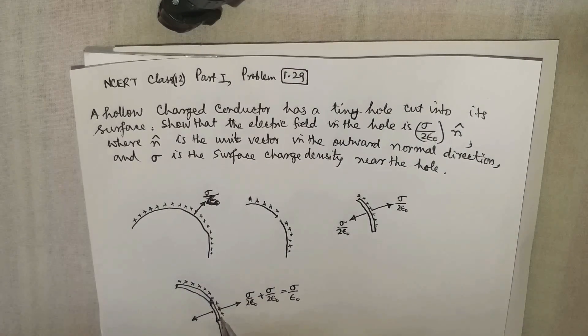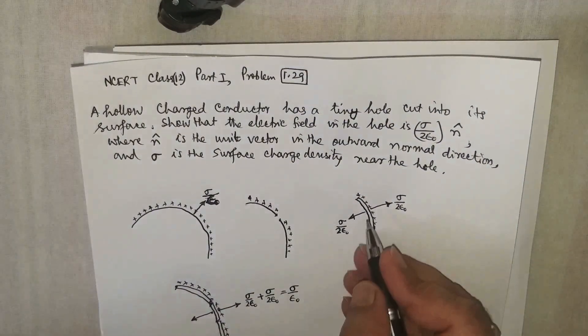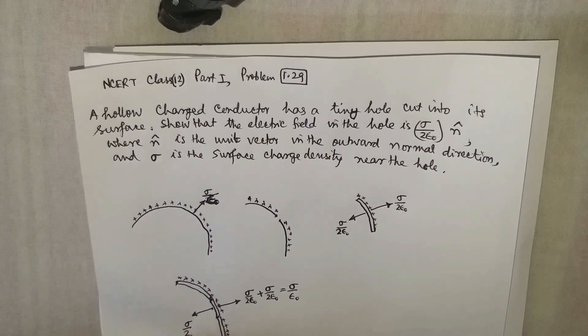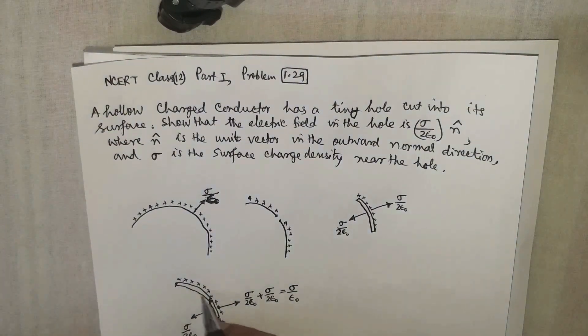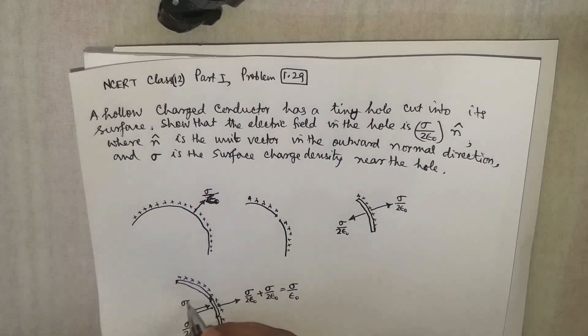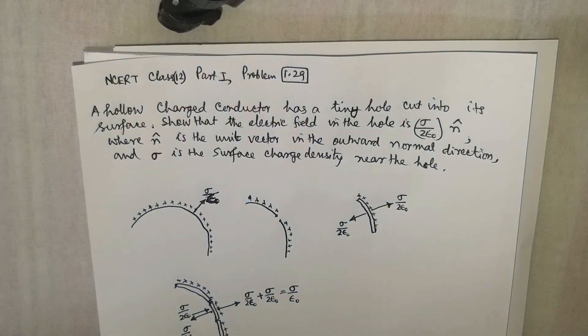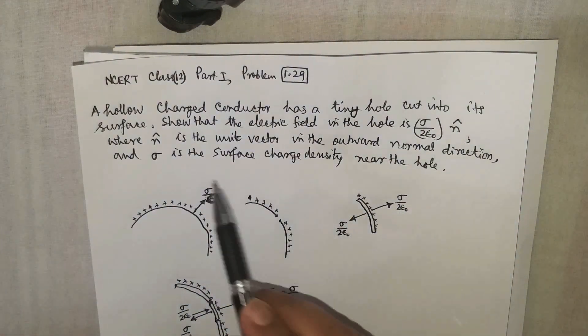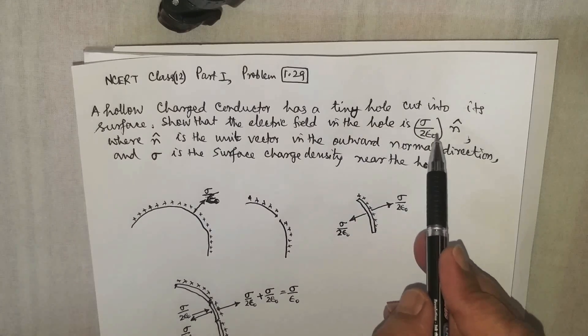Here the field only due to this small part which was replaced is equal to sigma by 2 epsilon naught, and due to the rest of the conductor should be just opposite, sigma by 2 epsilon naught. Then only the net field will be zero. So that means the answer is: show that the electrostatic field in the hole is sigma by 2 epsilon naught.